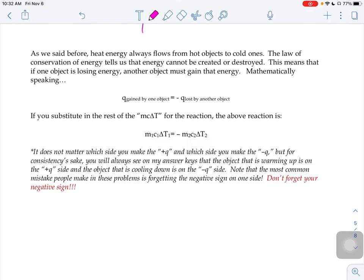We were mentioning before when we were defining what heat and temperature are, that heat energy always flows from hot objects to cold ones. We also have the law of conservation of energy, and that tells us that energy cannot be created or destroyed. So that means if one object's losing energy, something else has to be gaining that same amount of energy. Or mathematically speaking, the Q gained by one object is going to equal the Q lost by another object.